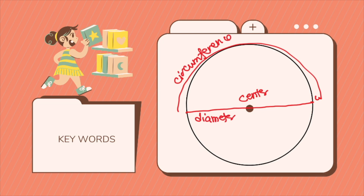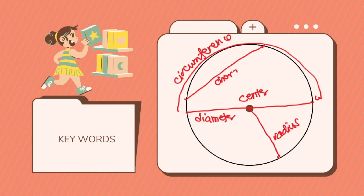Then we have what we call our radius. Our radius is the distance from the center of the circle to any point on the circumference. A segment touching two points of your circumference but not passing through the center is what we call a chord. Chord divides the circle into two segments — the smaller one is the minor segment, and the bigger area is the major segment.